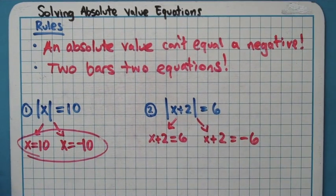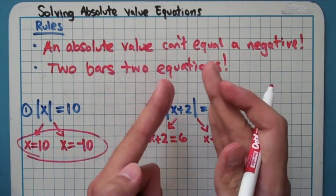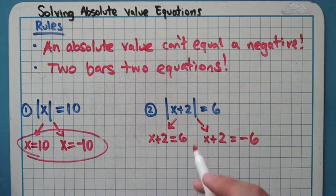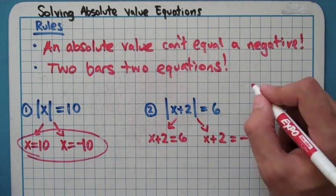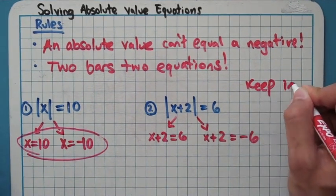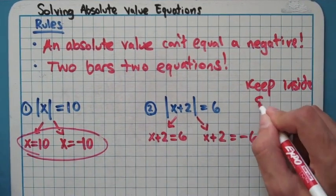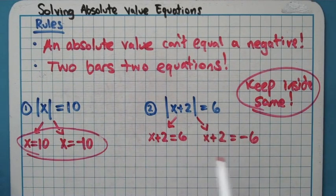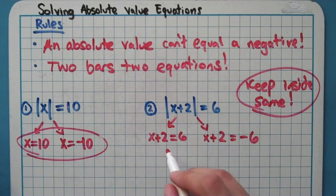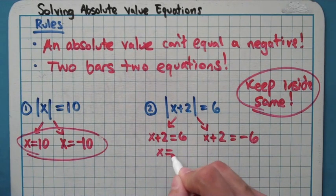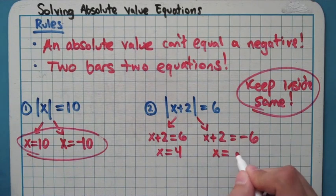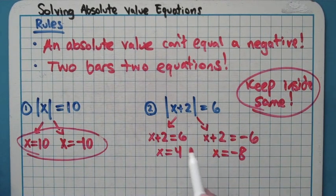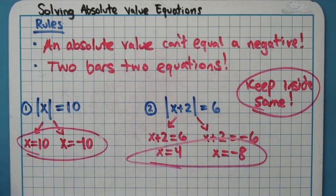If you see those two bars for the absolute value, break the problem into two different equations and solve them. Keep the inside the same — do not mess with the left side — and just make the answer negative for the second equation. When you do this, there are no more absolute value signs; you're just doing regular algebra. Solving both gives x equals 4 and x equals negative 8. If you plug negative 8 back in, you'll find it works. Those are our two solutions.